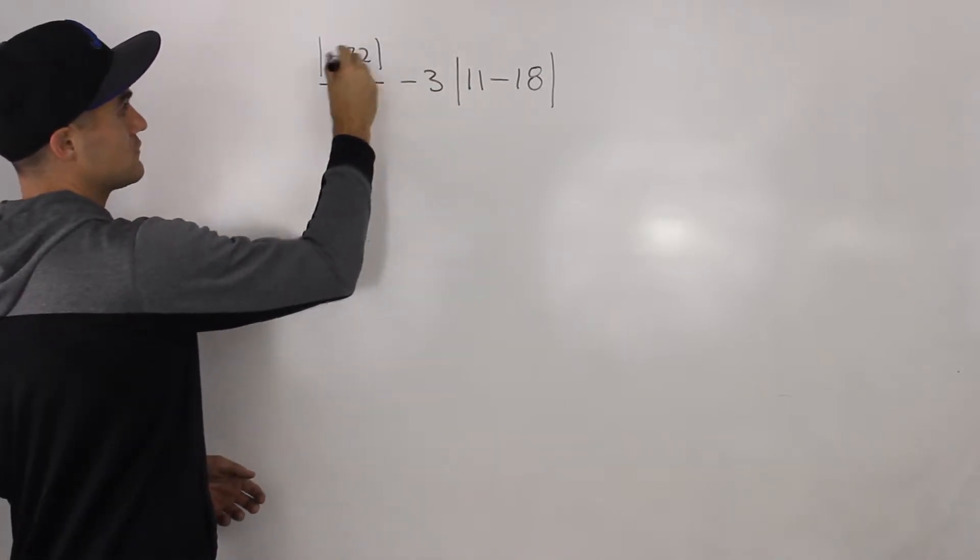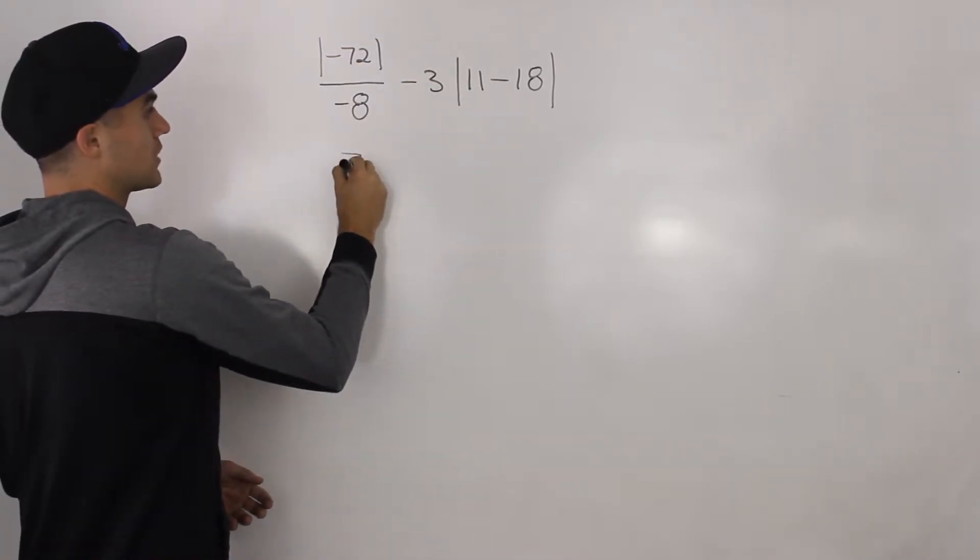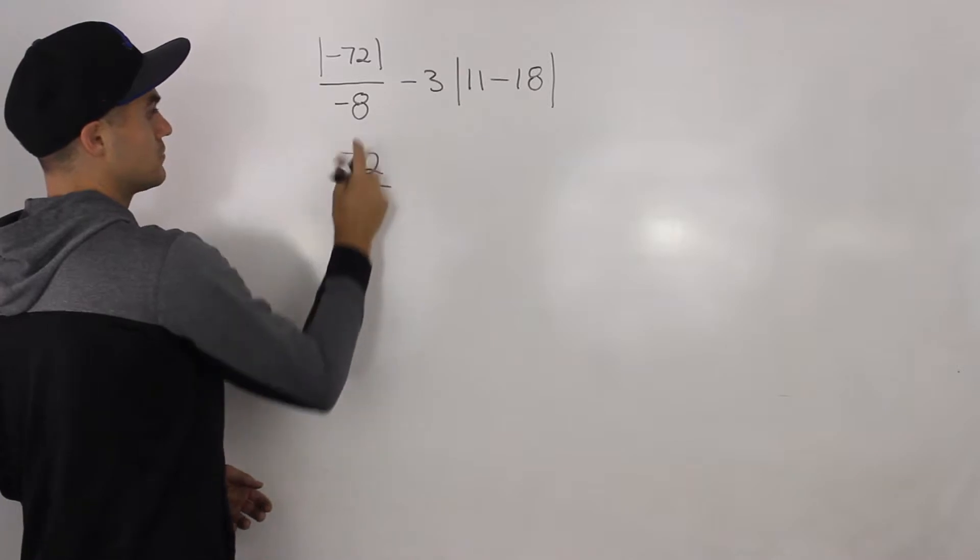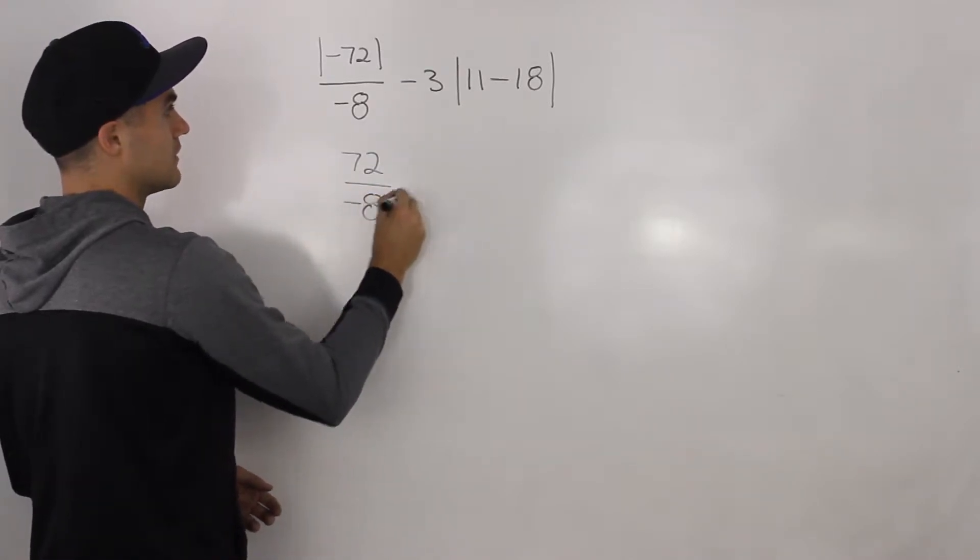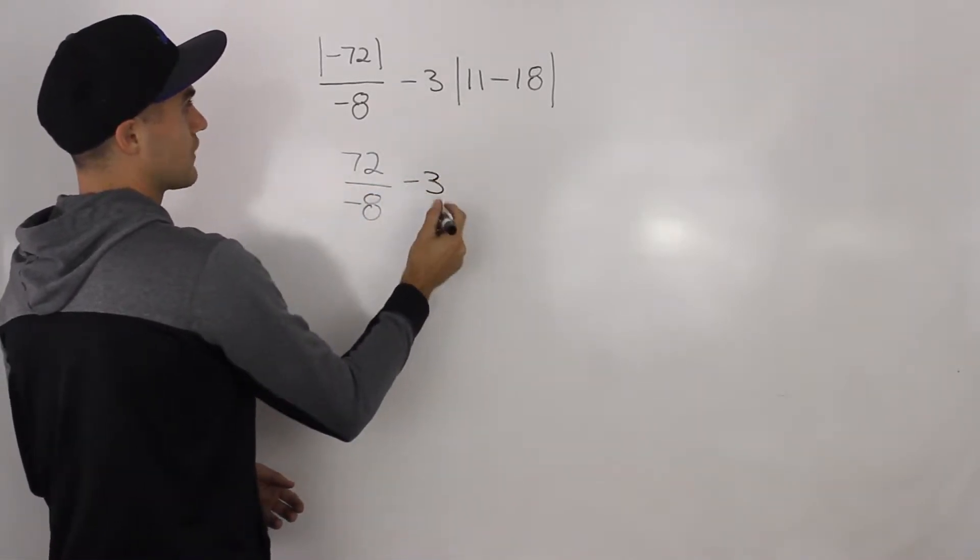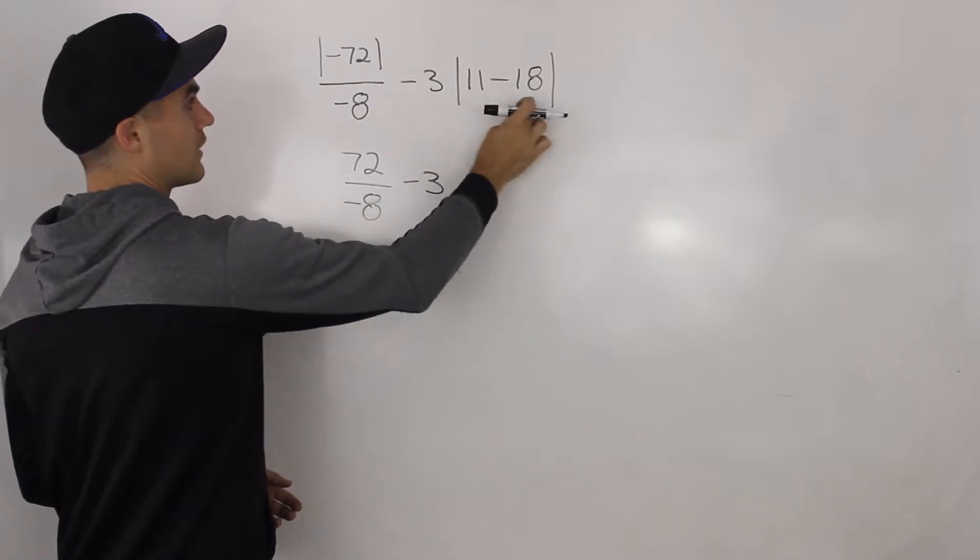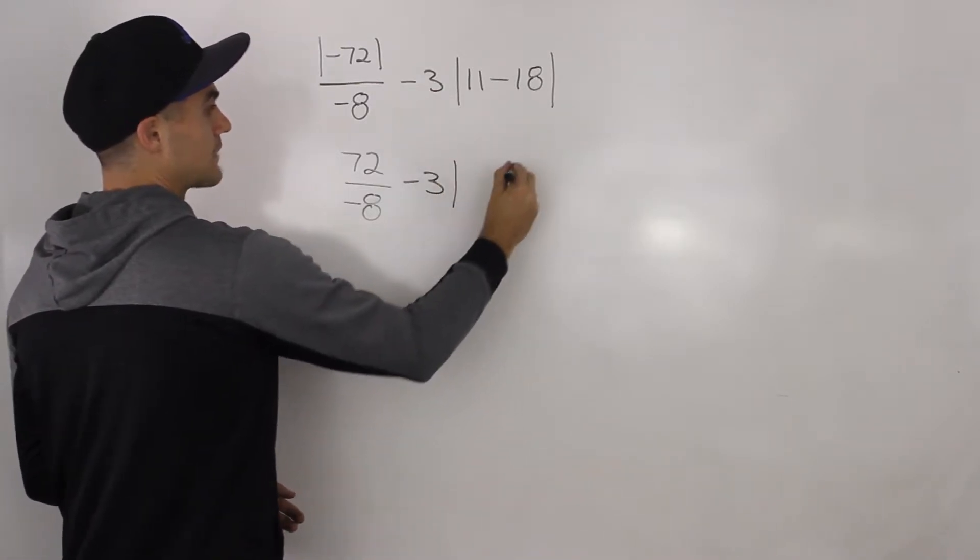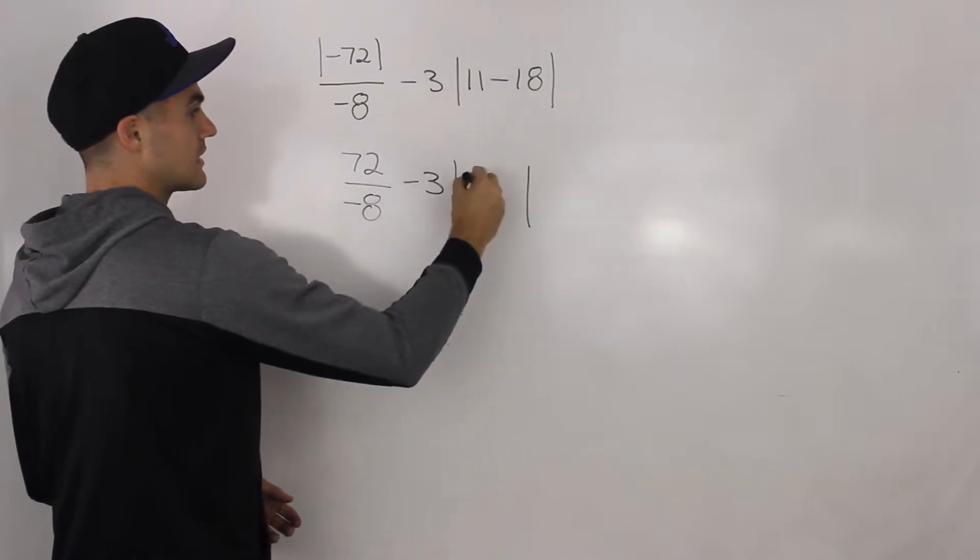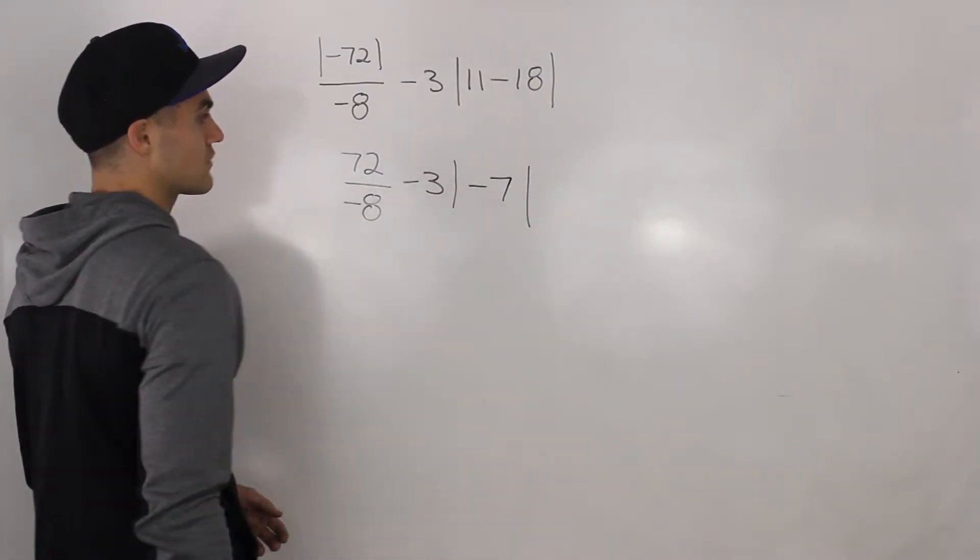So this absolute value of negative 72 becomes positive 72. We would still be dividing it by negative 8. We have this minus 3 in front. Then we evaluate the expression within the absolute value: 11 minus 18 gives us negative 7.